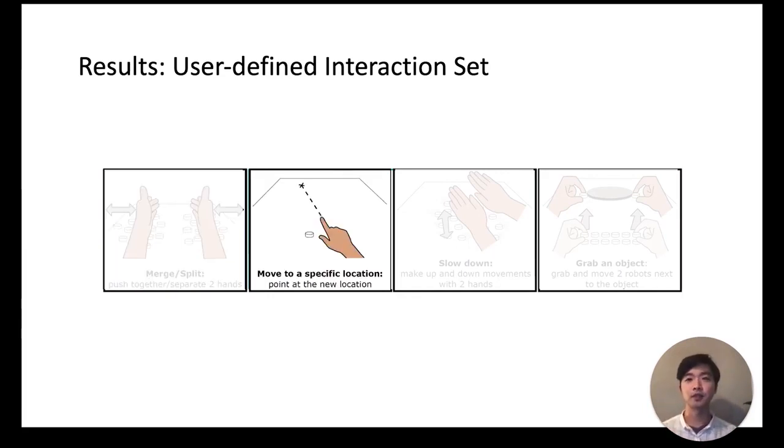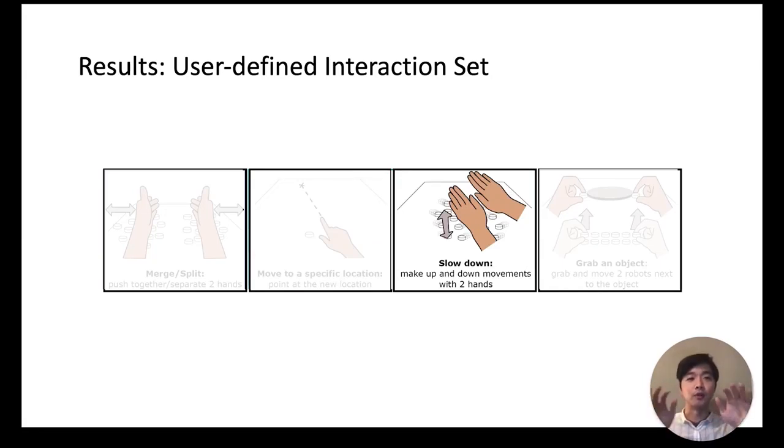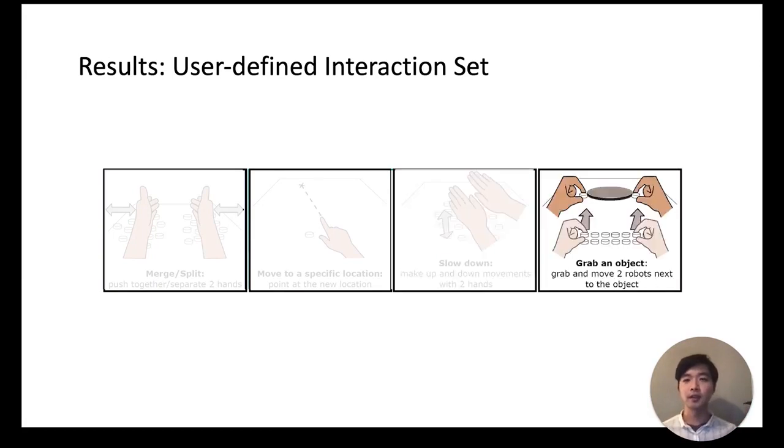As seen from the previous video, to command a single robot to move to a specific point, users were most likely to point at the goal location. When controlling the speed of the robots, participants used a calming gesture with both of their hands. Finally, for a grab an object task, participants physically manipulated two of the robots and moved them toward the object and expected the rest to follow. For the full interaction set please refer to our paper.